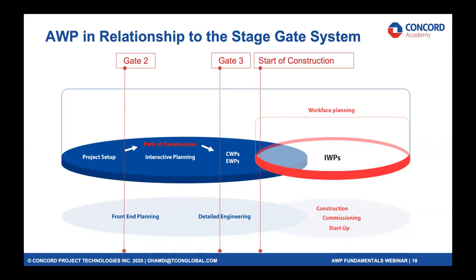Advanced work packaging really works — the 'advanced' part works — when, at least in stage three during FEED, you start building your path of construction. Your path of construction is your plan and your breakdown of areas with full buy-in, including operations. We receive many requests where people say they want to implement AWP but have already started detailed engineering — that's too late. It's really important to start the AWP system in phase three, where you start delivering the path of construction.